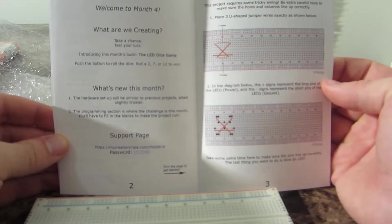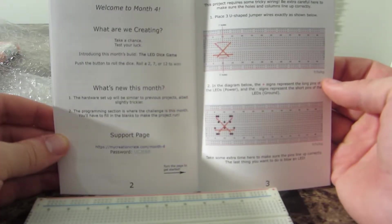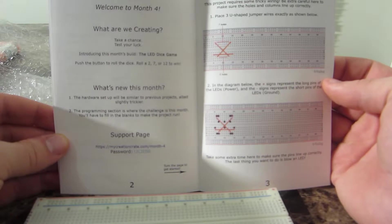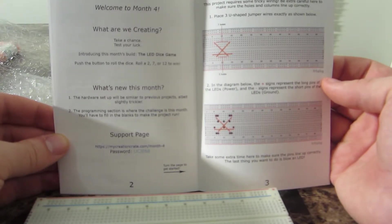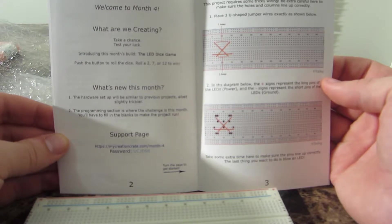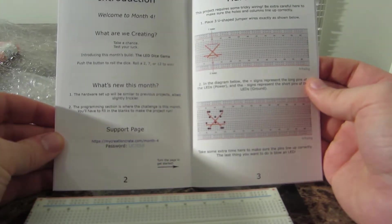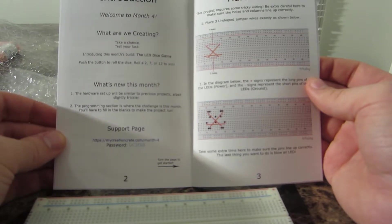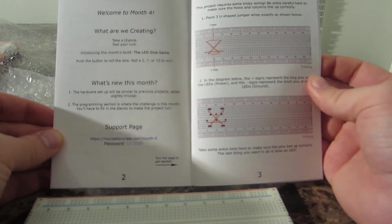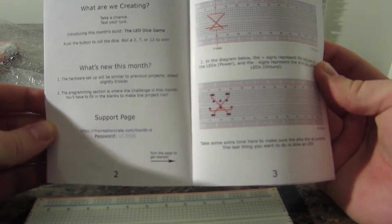Welcome to month four. What are we creating? Take a chance, test your luck. Introducing this month's build: the LED dice game. Push the button to roll the dice, roll a 2, 7, or 12 to win. What's new this month? The hardware setup will be similar to previous projects, but slightly trickier.